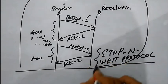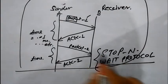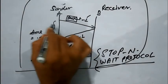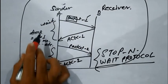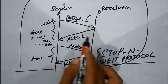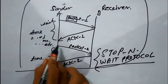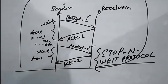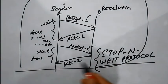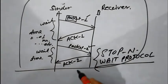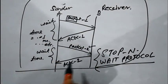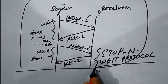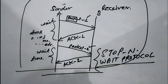Why is it called Stop-and-Wait? The name indicates that the sender sends a packet and waits for a particular time to receive an acknowledgement. After receiving the acknowledgement, the sender sends the next packet and again waits. This process ensures reliable delivery of packets, which is why it is known as the reliable transfer of packets.